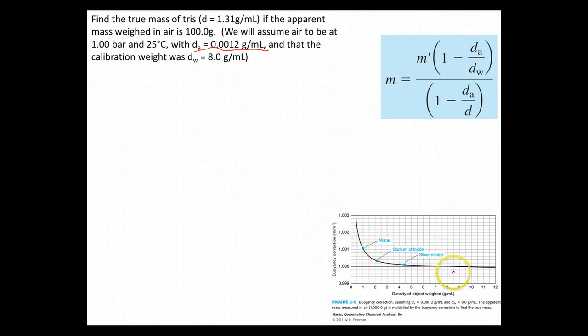So, now, you can see that if I'm using an 8-gram weight to calibrate it, there's going to be no correction needed when the object is 8 grams. Now, if the object is lighter than 8 grams, there's going to be some buoyancy. And so the object is going to basically be floating in air just a little bit more than the brass weight was. And so it's going to appear to be lighter than it actually is. So we have to use this correction factor to fix that.